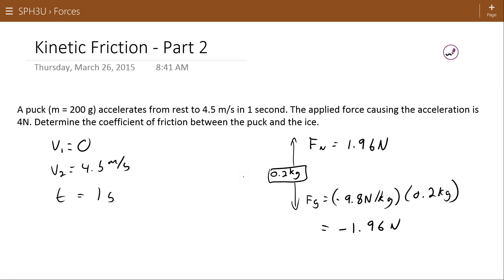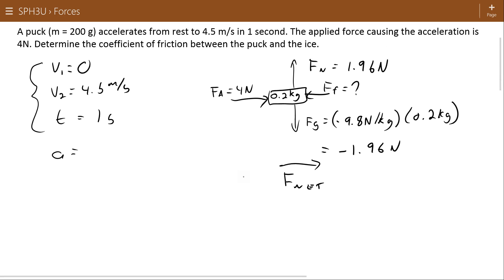We have an applied force of 4 newtons, some frictional force pointing back on it. And we can't get that frictional force directly. What we're going to have to do is use our motion information to get acceleration. And then with that acceleration, we can find the net force. And then with the net force, we can find the force of friction.